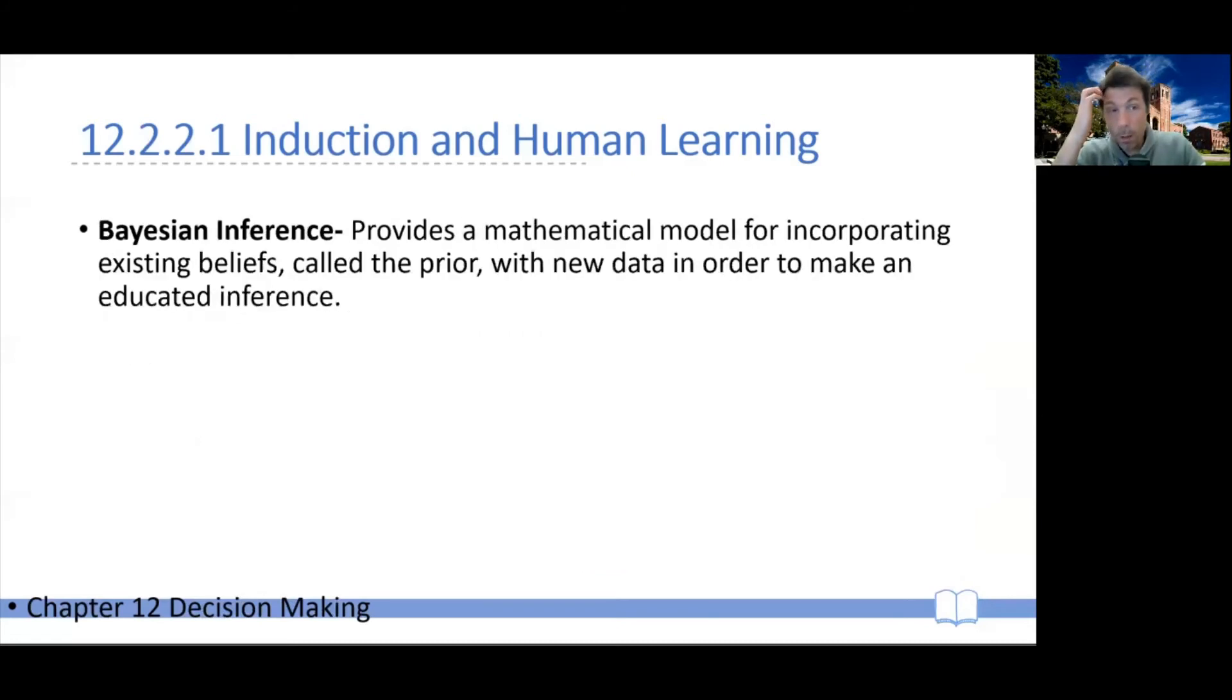But of course, the question is how exactly can children achieve this and how can we have one-shot learning? Now, one explanation for one-shot learning is so-called Bayesian inference. Now, just to explain what that is, Bayesian inference is a mathematical framework that allows you to use what you already know in order to make inferences, in order to make educated guesses.